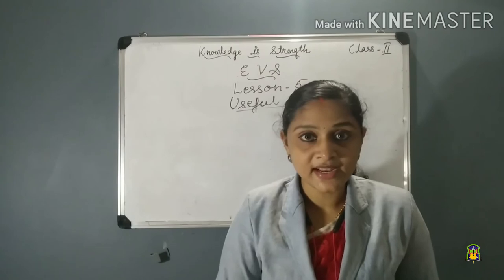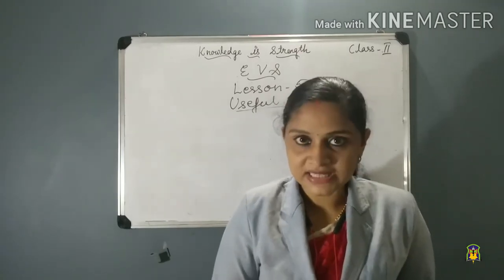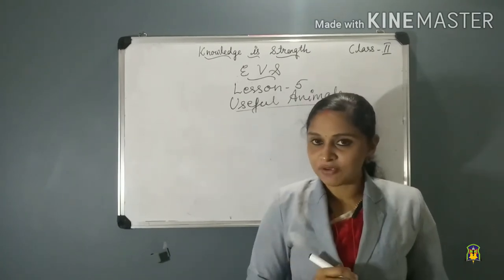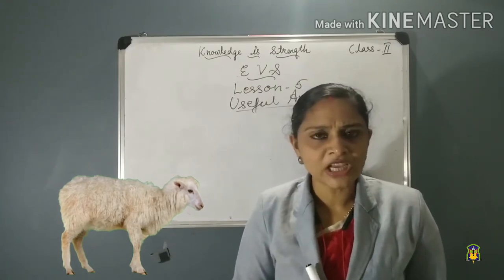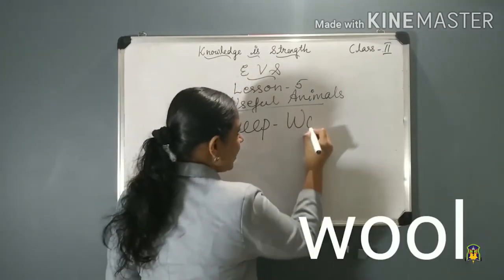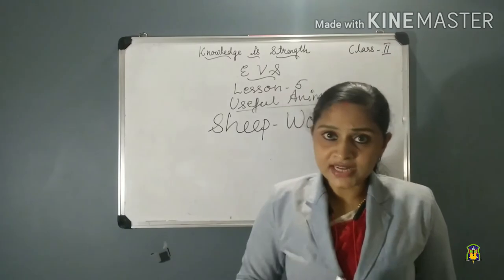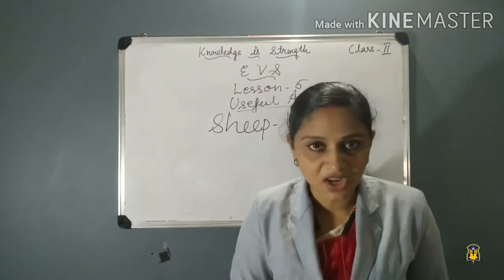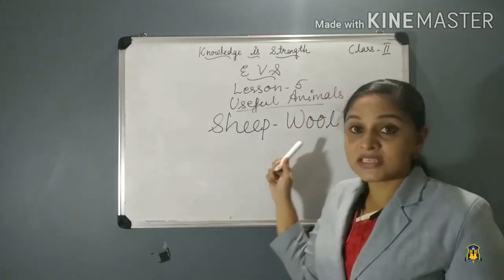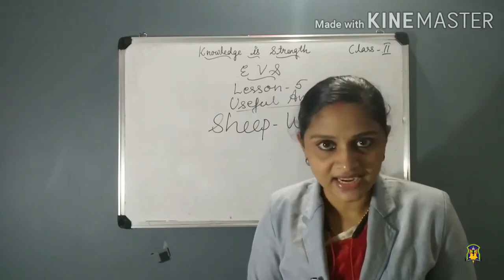So we get wool, leather, and silk from animals. Which animal gives us wool? Yes — sheep! The spelling of sheep is S-H-E-E-P. Sheep give us wool, and this wool is used for making woolen clothes. During winter season we wear woolen clothes because they keep our body warm. Sheep give us wool, and wool is used for making woolen clothes, which we wear during winter season.